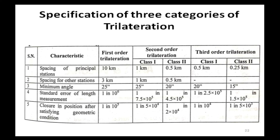Standard error of length measurement: for first order trilateration it should be 1 in 10⁶; for second order class 1 it is 1 in 7.5 × 10⁵, and for class 2 it is 1 in 4.5 × 10⁵; for third order class 1 it is 1 in 2.5 × 10⁵, and for class 2 it is 1 in 1.5 × 10⁵. Closure in position after satisfying geometric conditions: for first order it is 1 in 10⁵; for second order class 1 it is 1 in 5 × 10⁴, and class 2 is 1 in 2 × 10⁴; for third order class 1 it is 1 in 10⁴, and class 2 is 1 in 5 × 10³.